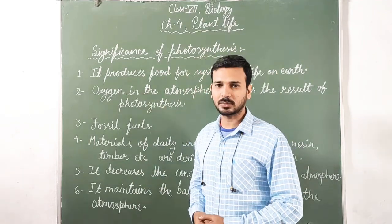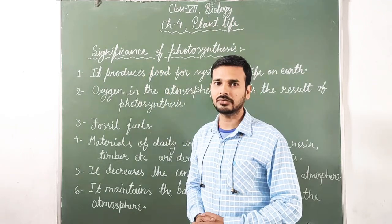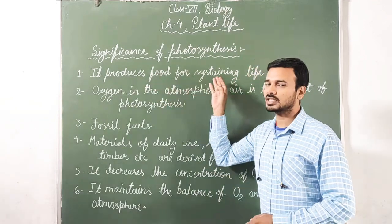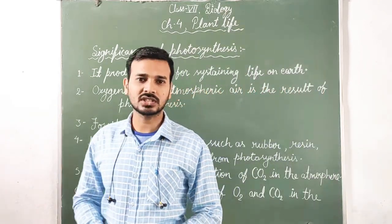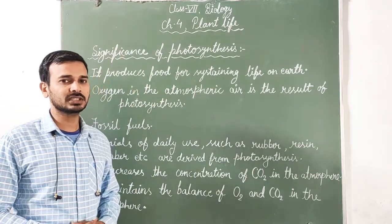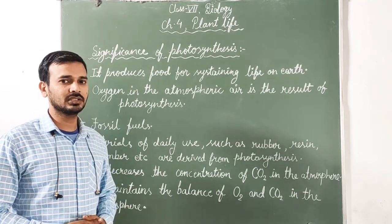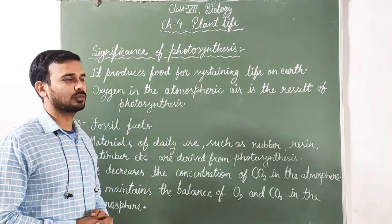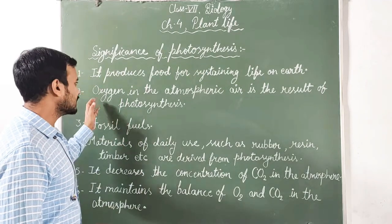We are going to discuss six points about the significance of photosynthesis. Point number one: it produces food for sustaining life on earth. Food is very essential to sustain life on earth. Without it, animals and human beings cannot survive. Whatever food we eat, or animals eat, ultimately comes from green plants, which prepare that food by the process of photosynthesis.